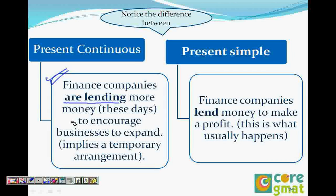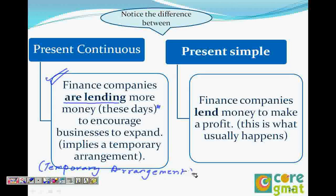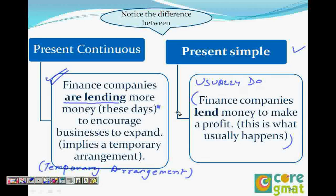'Are lending' would mean these days — that is not what they generally do. This is just a temporary thing; it implies a temporary arrangement. Anything that is in the ING or continuous form is always a temporary thing. But when we go to present simple, we say: 'Finance companies lend more money to make profit.' This is what they usually do — not a temporary thing. 'Are lending' means they might not lend it tomorrow.